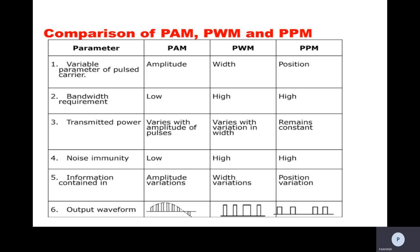These are the various differences between PAM, PWM, and PPM. In all three modulations, we use a pulse carrier — a train of pulses — as the carrier only. That concludes today's class. We have discussed analog pulse modulation schemes: pulse amplitude modulation, pulse width modulation, and pulse position modulation, along with the comparison between them. In the next class we will discuss the next topic. Thanks for watching.